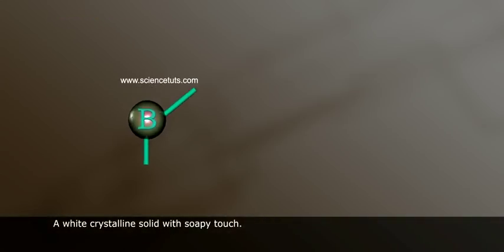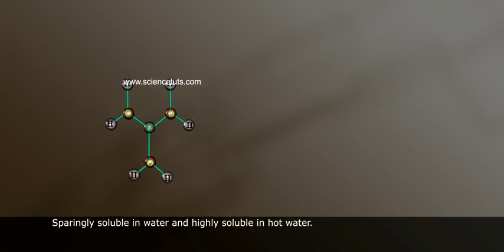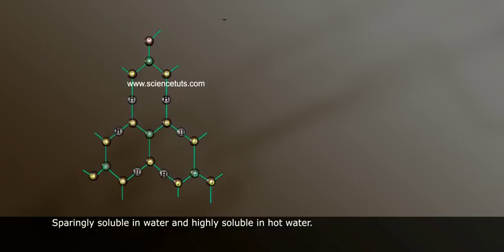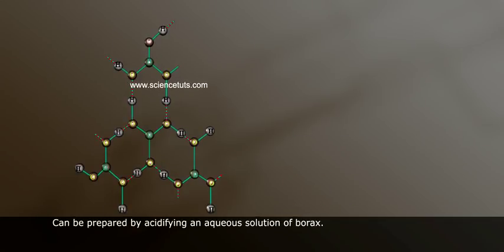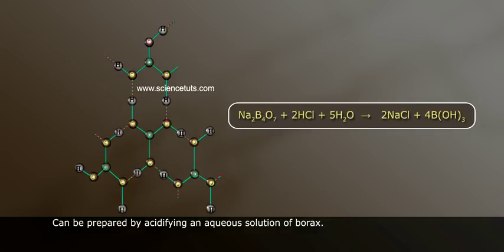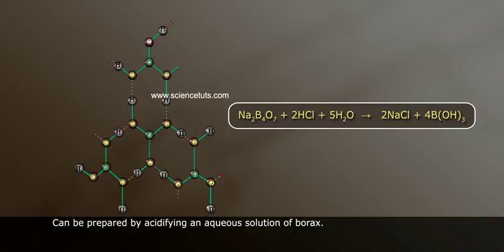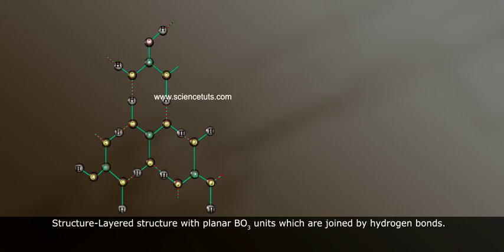Let us discuss about orthoboric acid. Orthoboric acid is a white crystalline solid with a soapy touch. It is sparingly soluble in water and highly soluble in hot water. It can be prepared by acidifying an aqueous solution of borax: Na2B4O7 + 2HCl + 5H2O gives rise to 2NaCl + 4B(OH)3. Its structure is a layered structure with planar BO3 units joined by hydrogen bonds, as shown in figure.